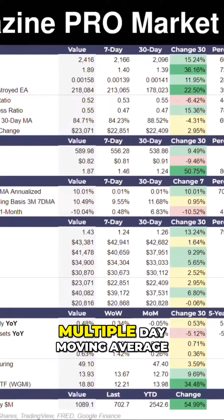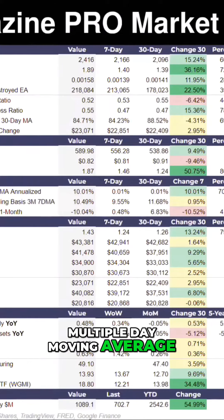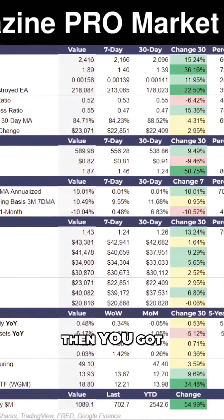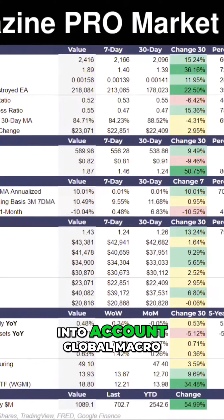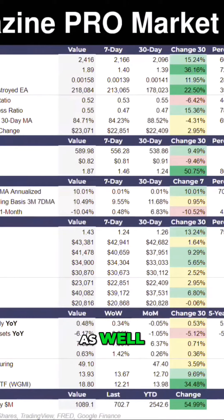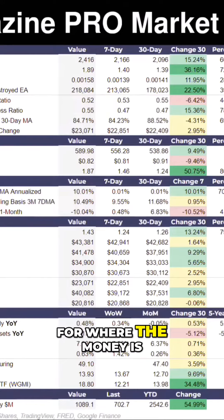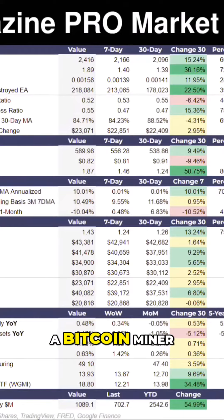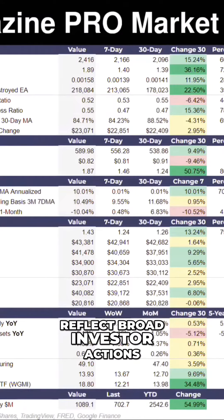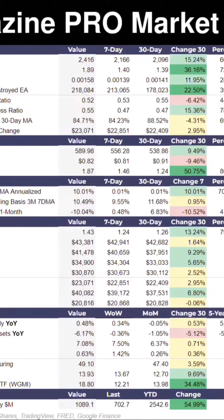Then you got the MIRE, multiple-day moving average realized price, etc. Then you got global M2 money supply — this is so important in the dashboard, and why I love it, because it takes into account global macro as well. And US net liquidity, and they give you a good feel for where the money is — remember, more money floats all boats. And then you've got Bitcoin miner ETF, Bitcoin fund flows, etc., reflecting broad investor actions and what's happening.